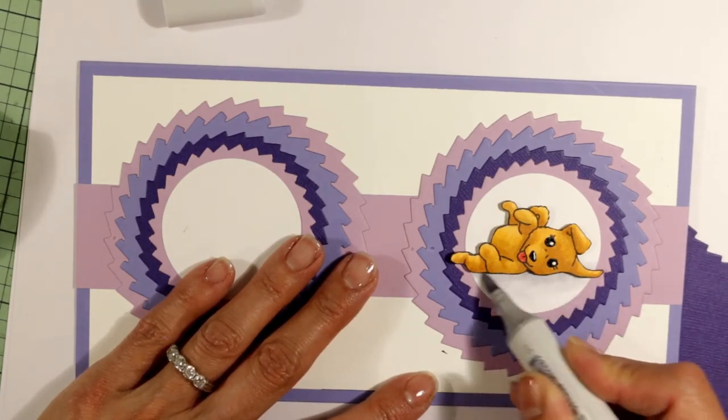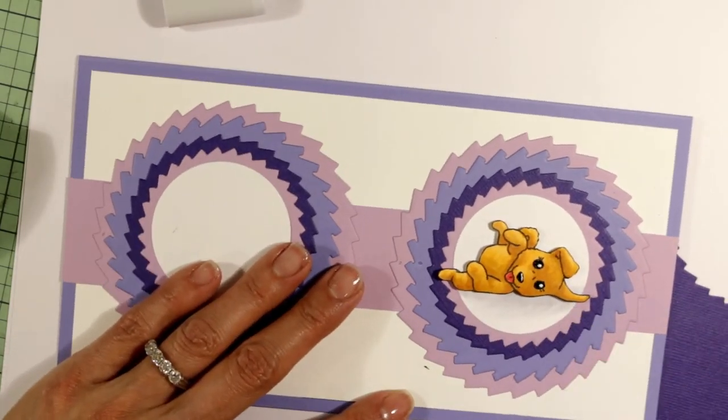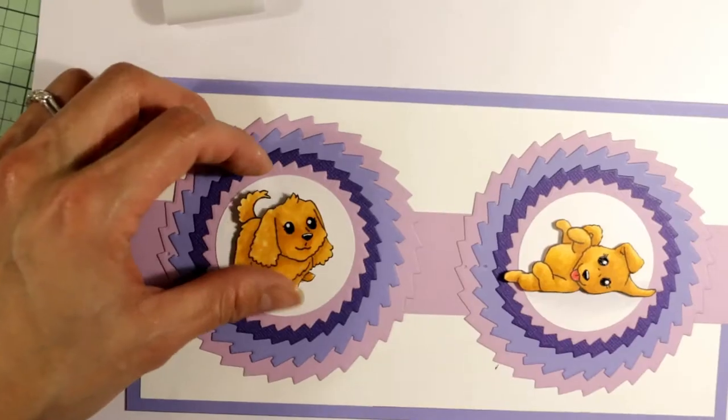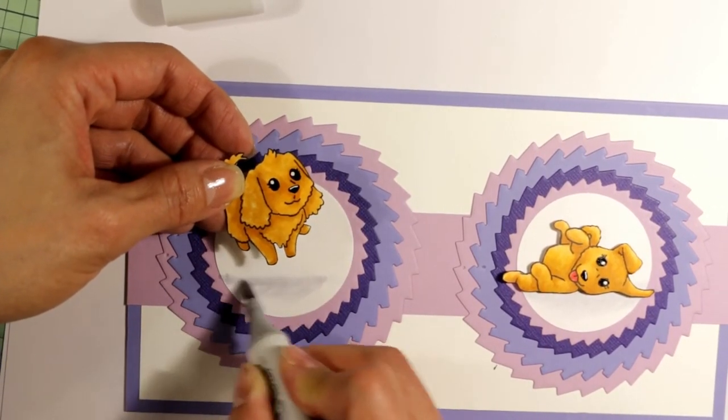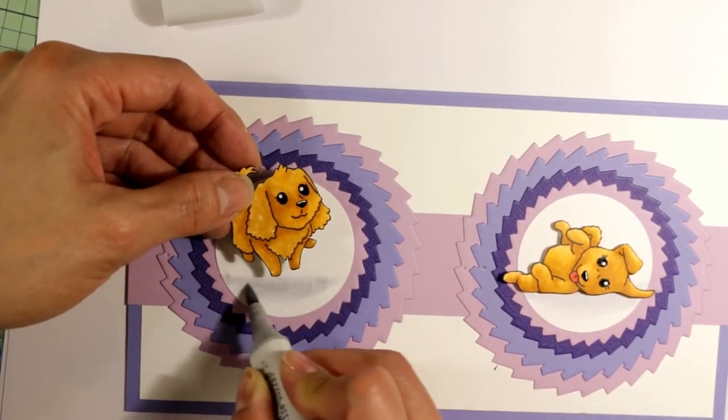I'm going to do the same for the other puppy who's standing. I'm adding just a little bit of a hint of a ground there with a Copic C1.